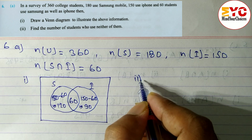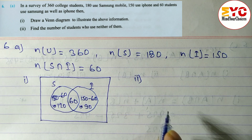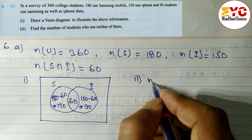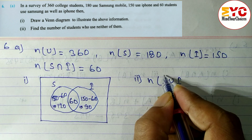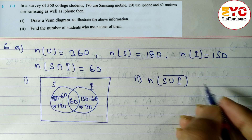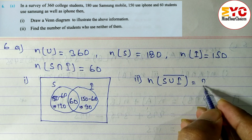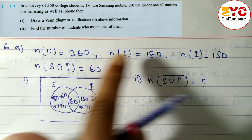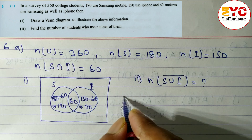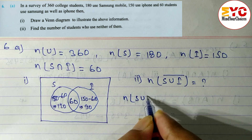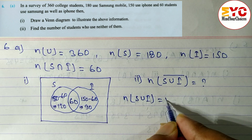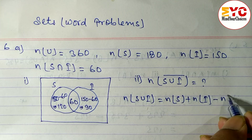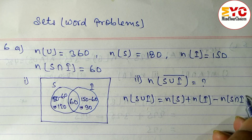In number two, we have to find the number of students who use neither of them. 'Neither of them' means S∪I complement. To find this, the formula is n(U) minus n(S∪I). But n(S∪I) is not given, so first we have to find n(S∪I).